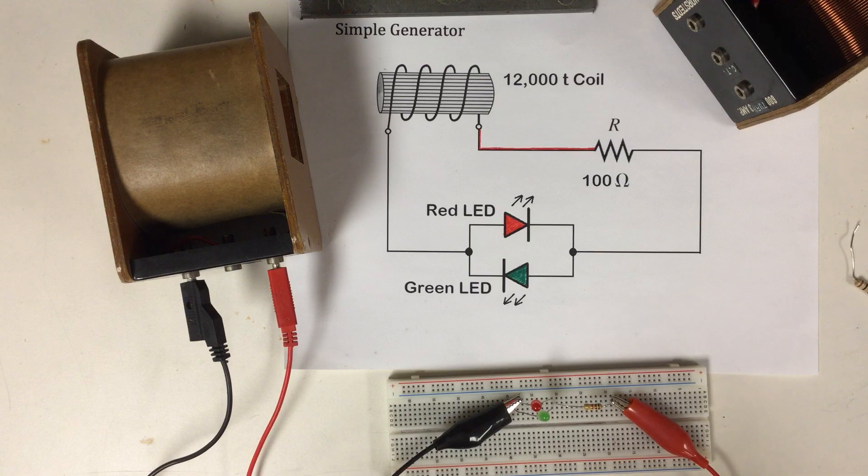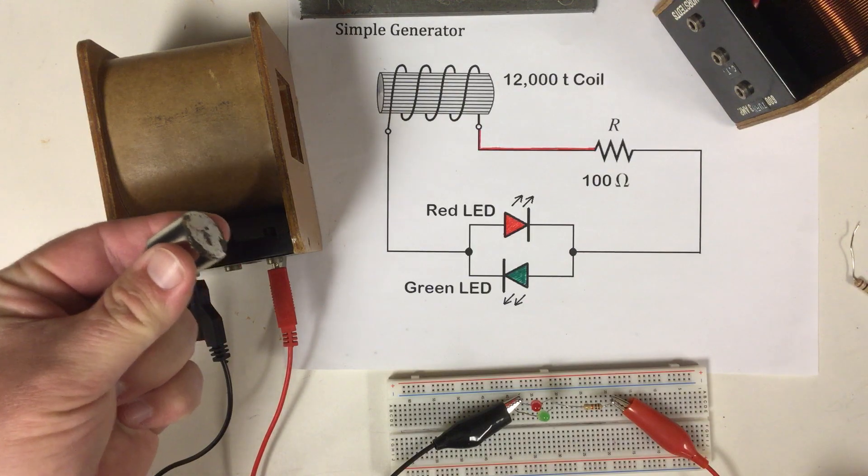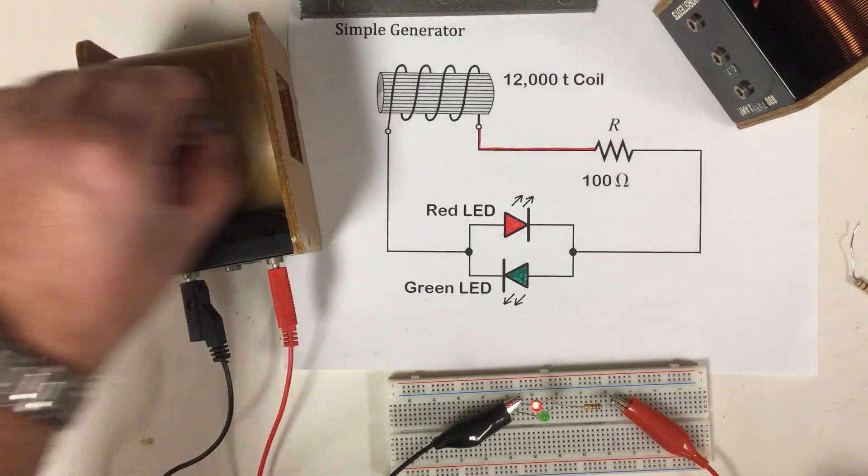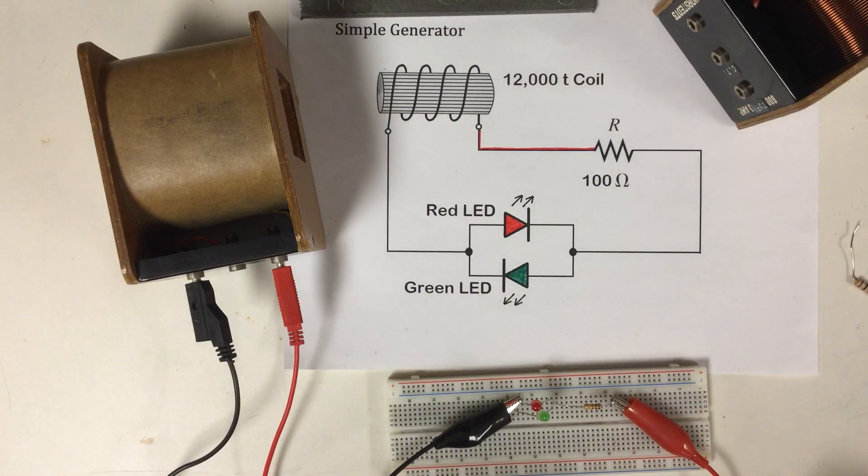So there you go. Faraday's law of induction. Anytime there's a relative motion between a magnetic field and a current carrying conductor, a voltage will be generated.